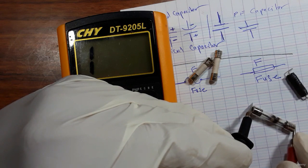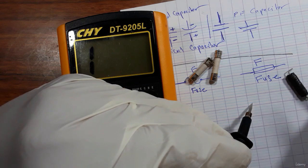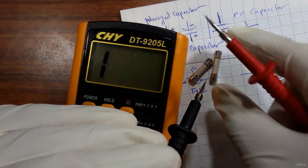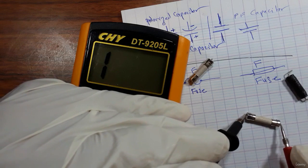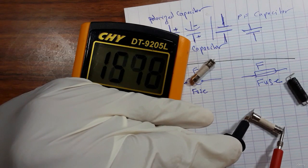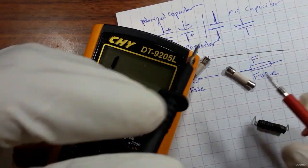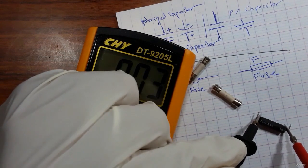No buzzer, no continuity on the multimeter means this fuse is burned out. We should replace it. Now let's check another serviceable one. Do you hear a buzzer? That means this fuse is good. Let's check this one also — this is a good one.